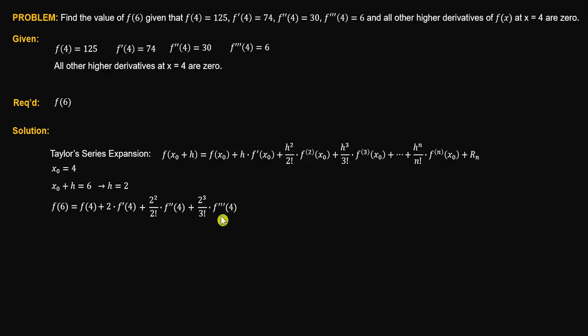Substituting the given quantities, that is equal to 125 plus 2 times 74 plus 2 times 30 plus 4 over 3 times 6. Using your calculator, we obtain the function value at 6 which is equal to 341.